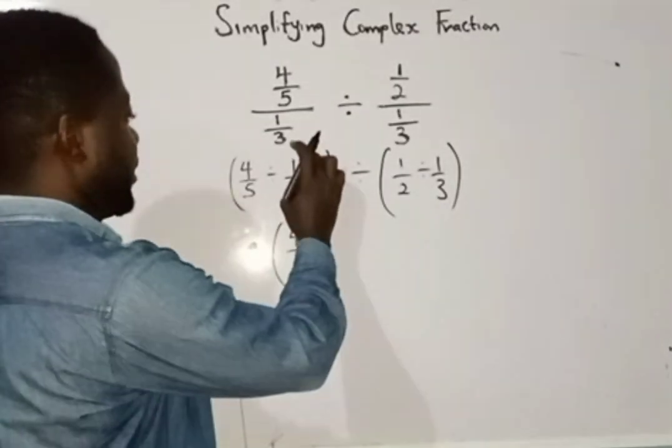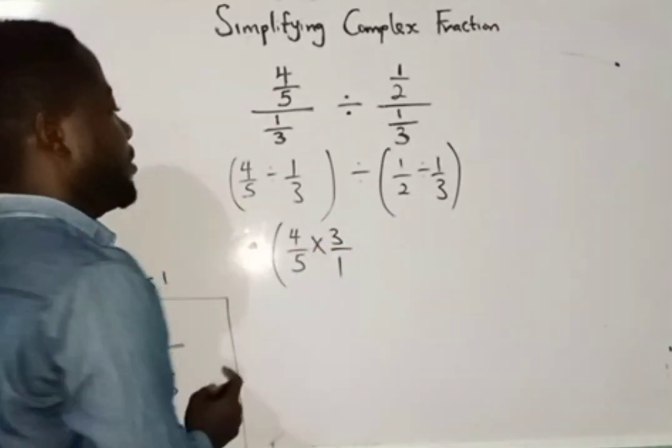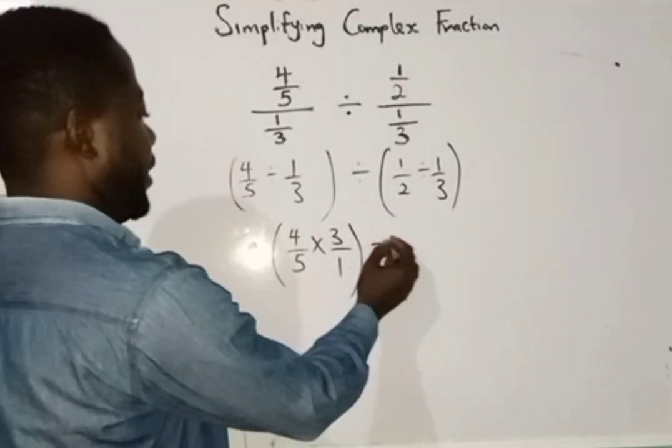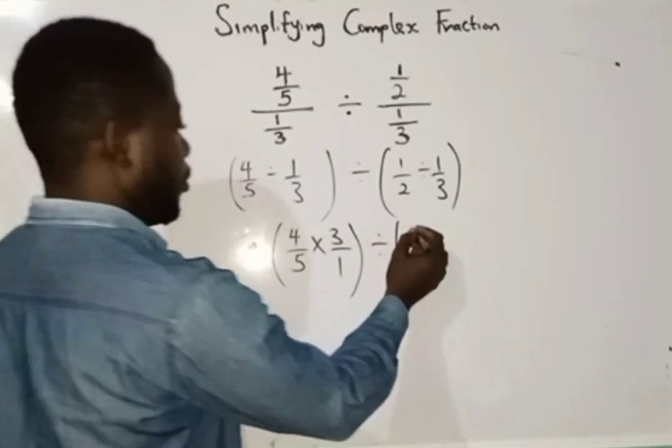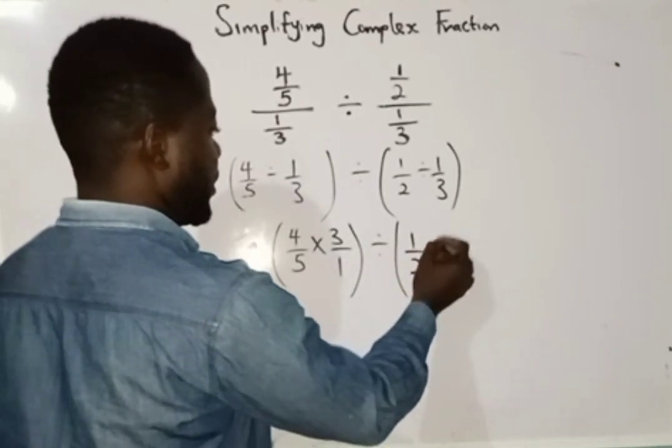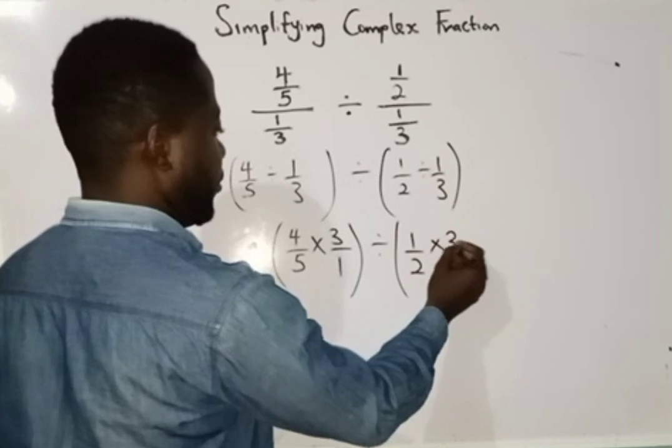And by doing that I am going to have 3 over 1, so divided by 1 over 2 times 3 over 1. So following the same process.